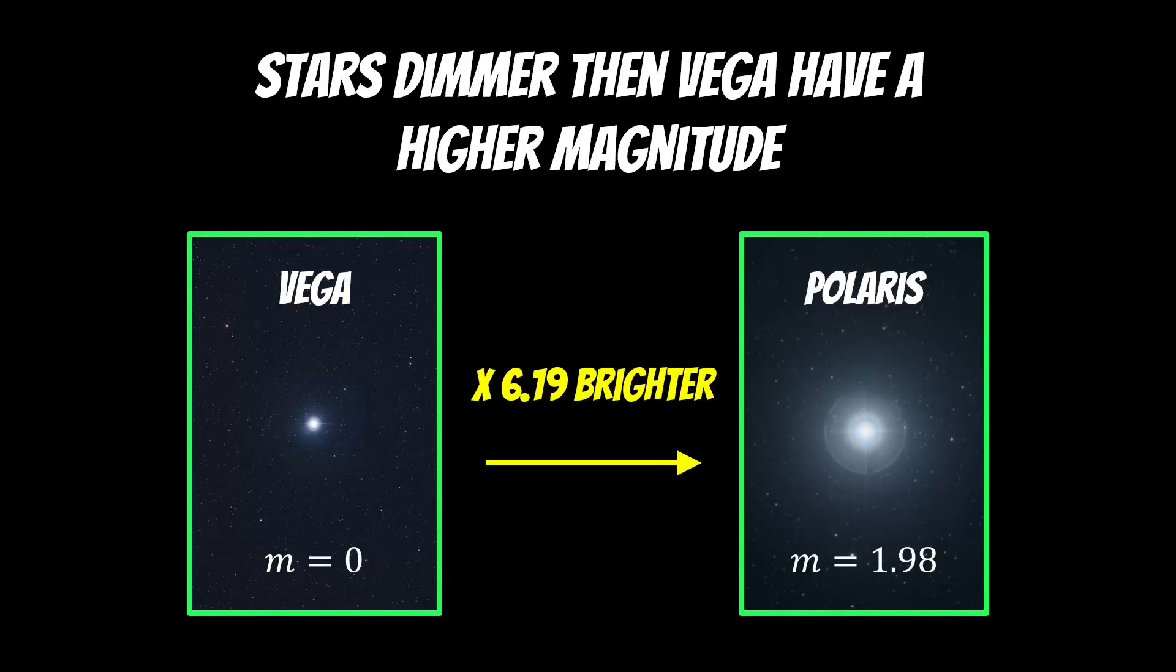So just some examples to put that into context. Vega has an apparent magnitude of zero and Polaris has got an apparent magnitude of about 1.98. It does vary a little bit, but it's around about 1.98. And that means that Vega is just over six times brighter than Polaris, how we would see in the sky. So it appears just over six times brighter than what Polaris would be, which is our north star.